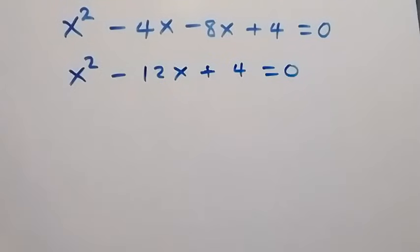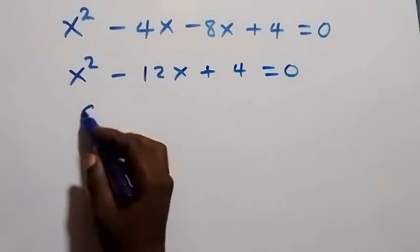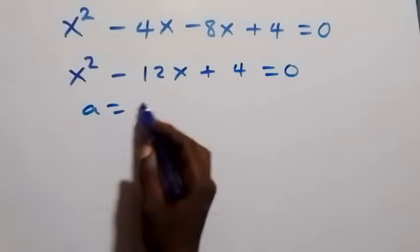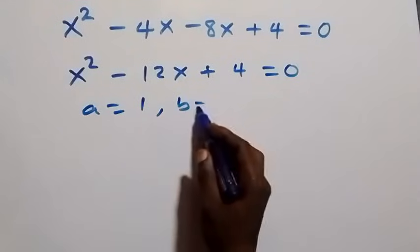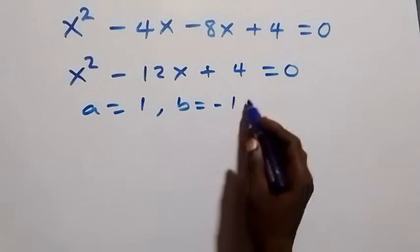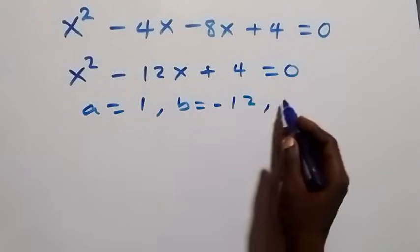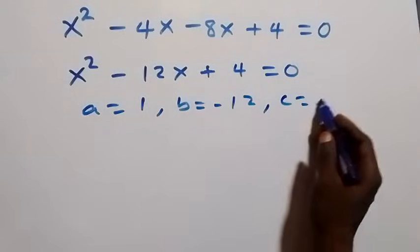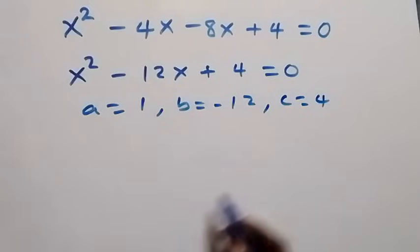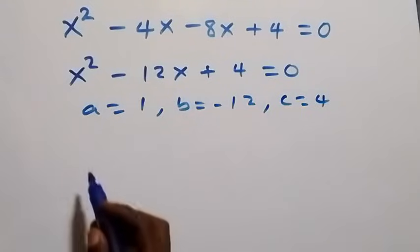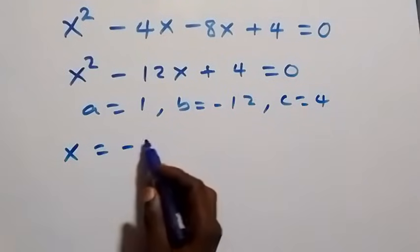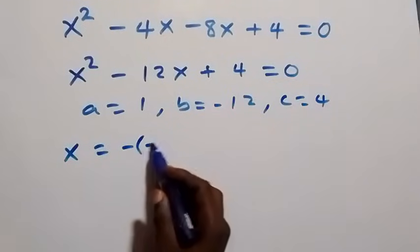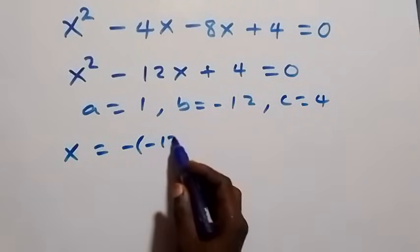This gives us a quadratic equation where a equals 1, b equals minus 12, and c equals 4. From the quadratic formula we have x equals minus b, which is minus minus 12, plus or minus square root of b squared minus 4 times a times c.